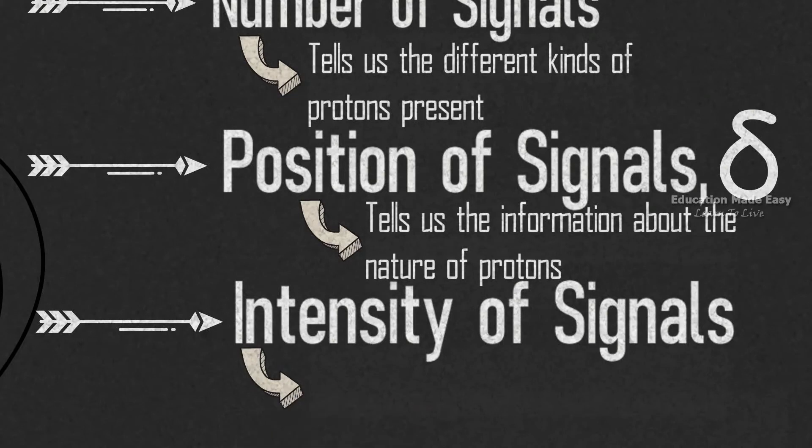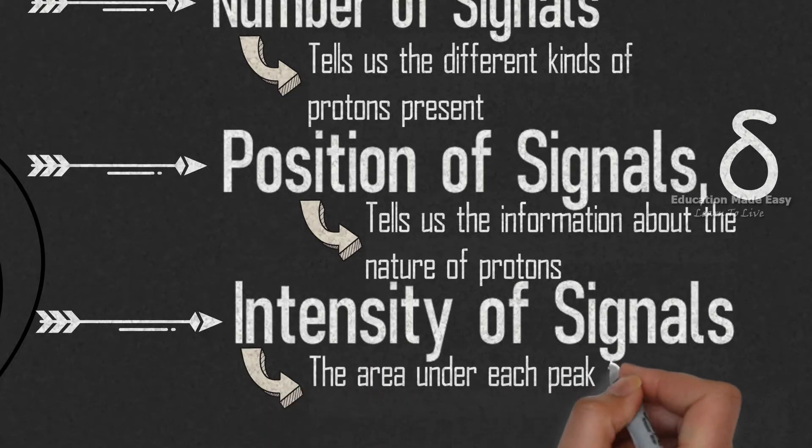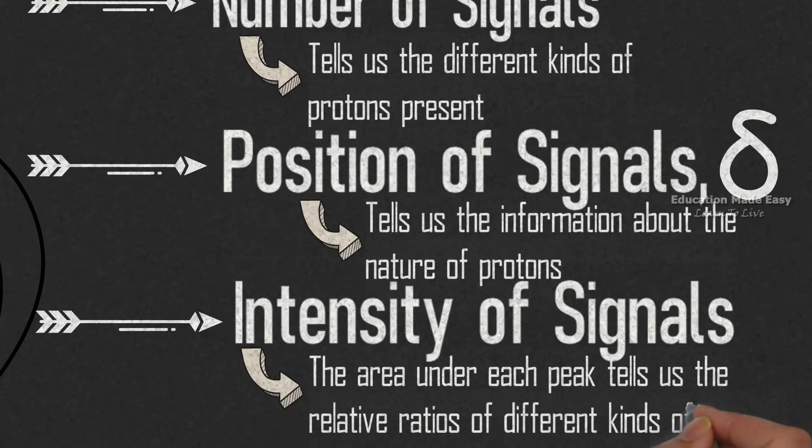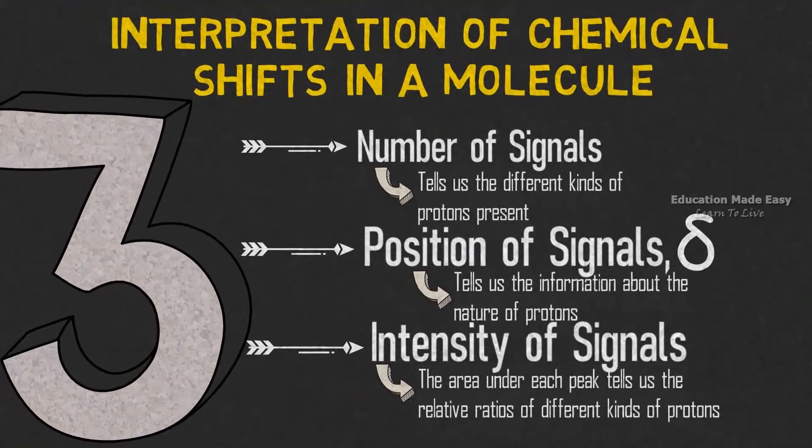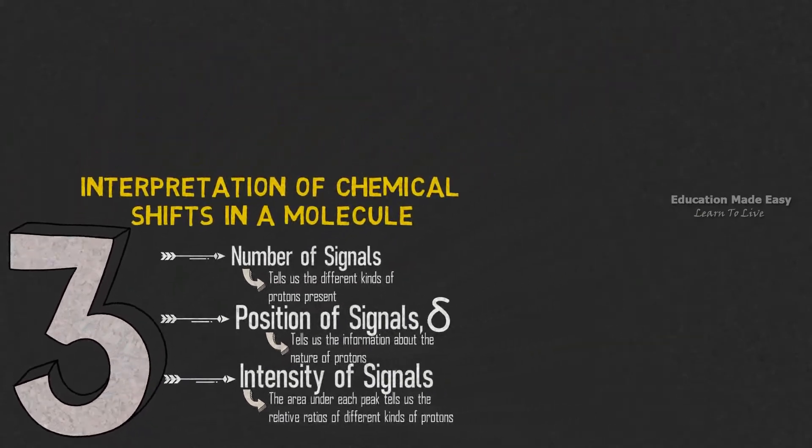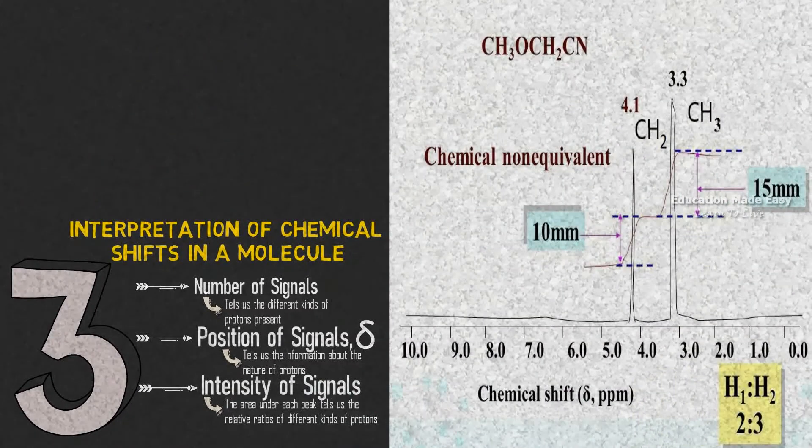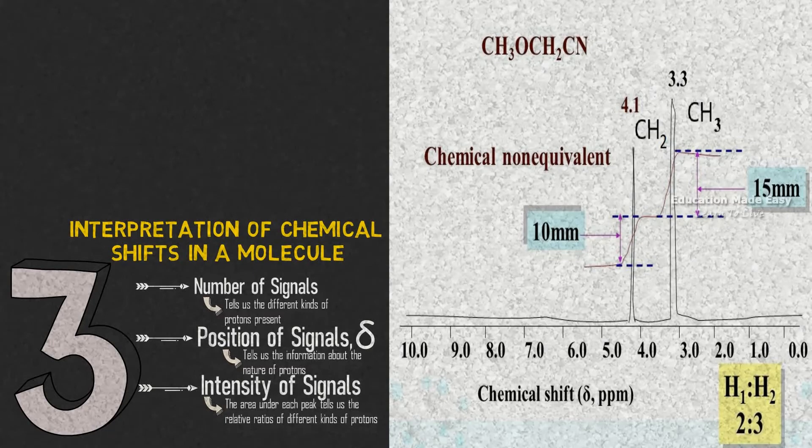From intensity of signals, we can get the area under each peak which tells us the relative ratios of different kinds of protons. The given figure shows the chemical shift values of CH3OCH2CN.